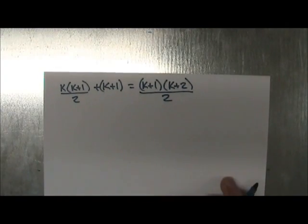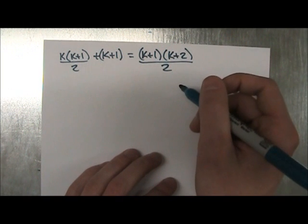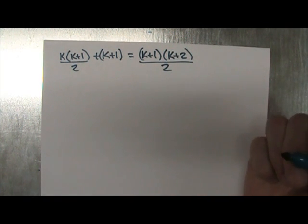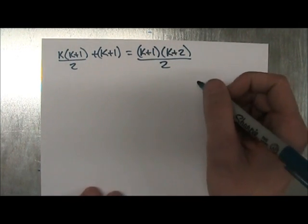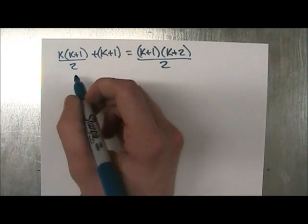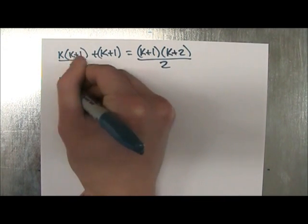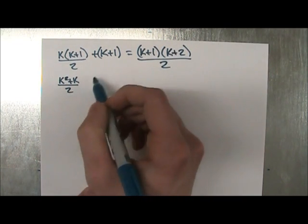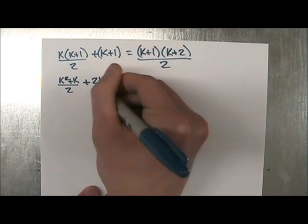All right, so now we have something we can work with, and we can actually develop this and see if the left hand side equals the right hand side. And if it does, then we know that Pk plus 1 is true. So let's see if we can do that. So we have k times k plus 1, which is k squared plus k over 2. And then we're going to put this over 2 so we can add these two together. So it's going to be 2k plus 2 over 2.